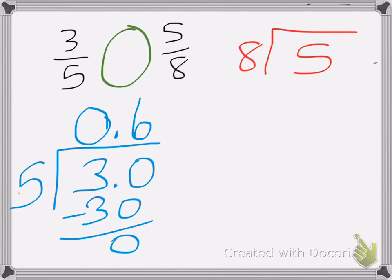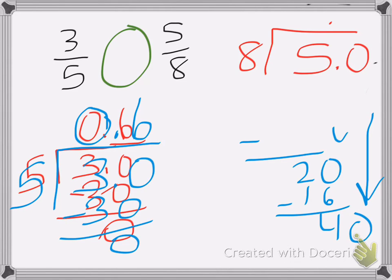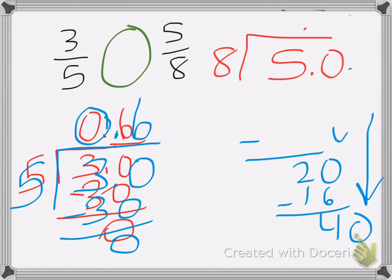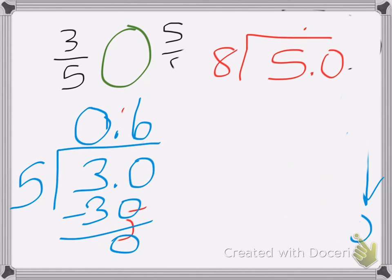Now I have 5 divided by 8. So again, add a decimal and a 0, decimal and a 0, decimal. 8 goes into 50, and I need to scoot this over so I have enough room. Okay, so 8 goes into 50, 6 times, that's 48.